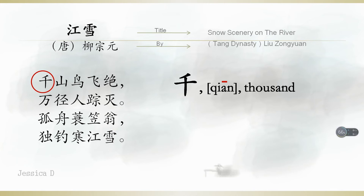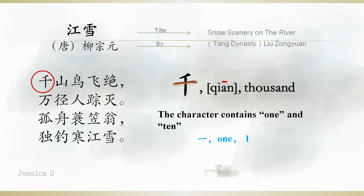The character contains 1 and 10. The Chinese character 1 is a horizontal line, and the Chinese character 10 is a horizontal line plus a vertical line. The cross represents number 10.